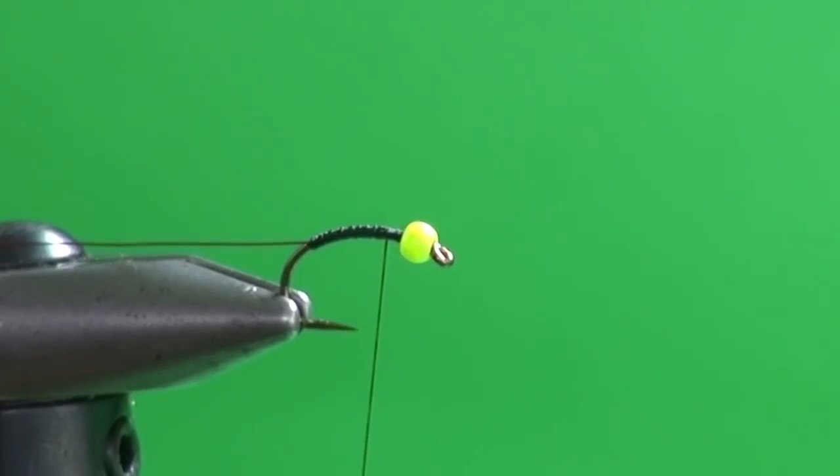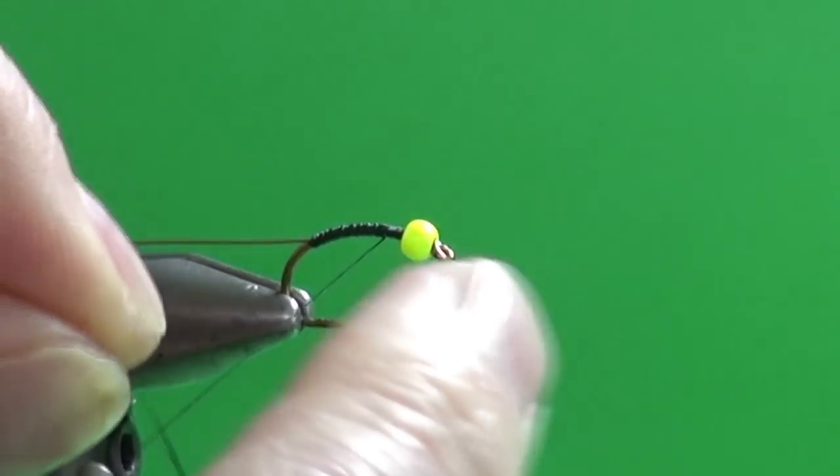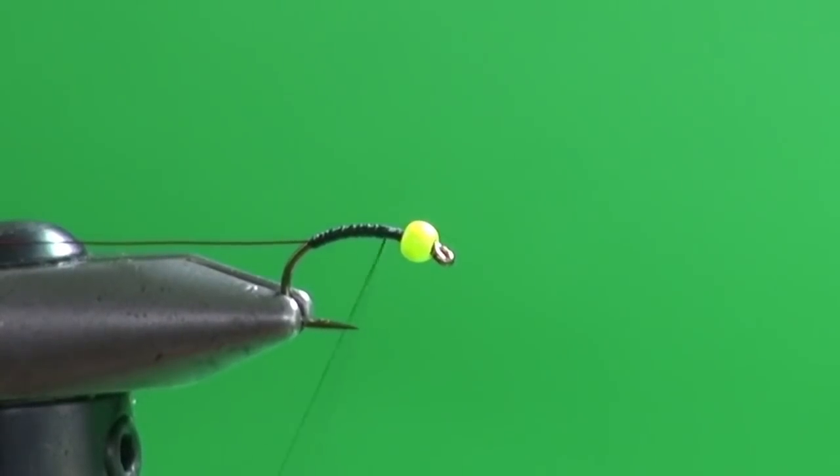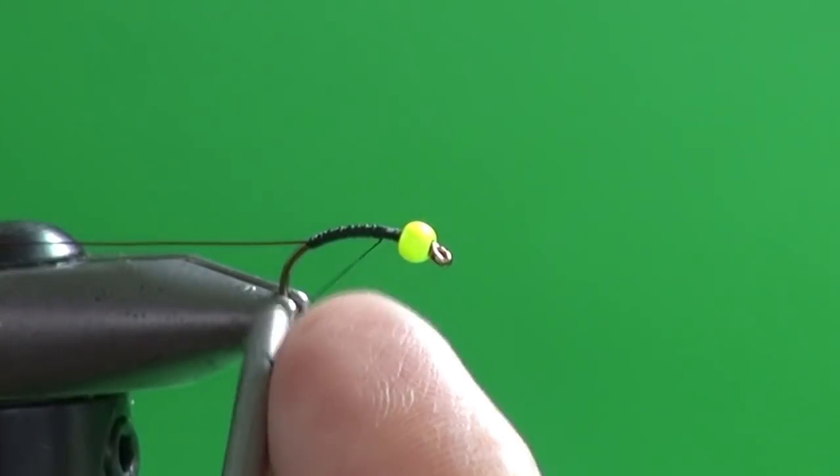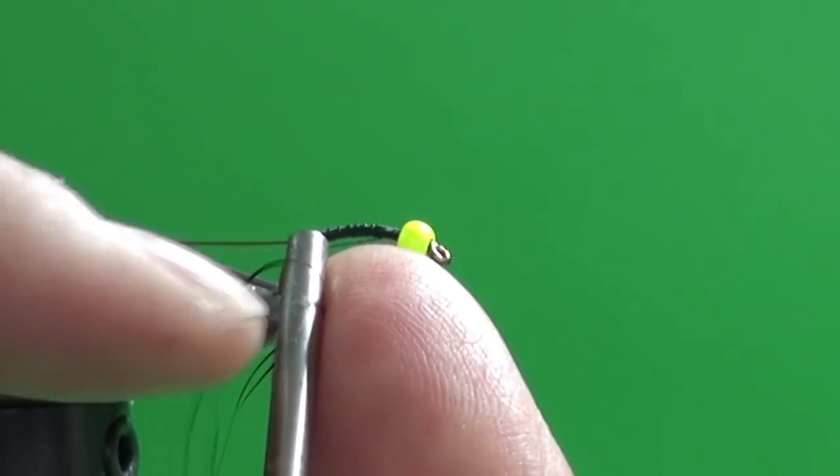And for the body, you could use black thread, black buzzer wrap. I'm just going to use a couple of strands of black Flashabou. I'm just going to bring this up close into the camera.